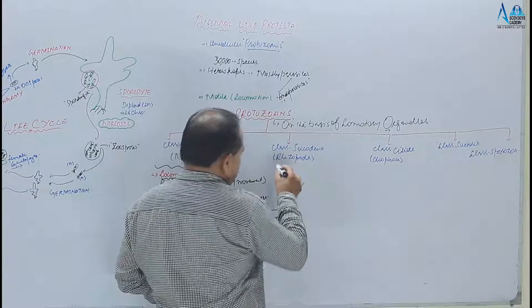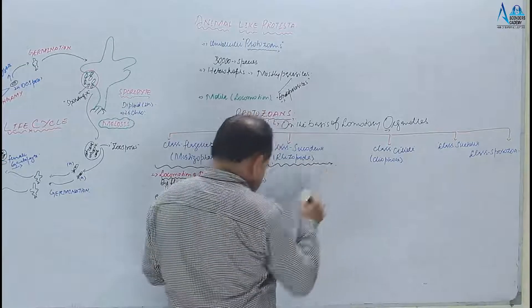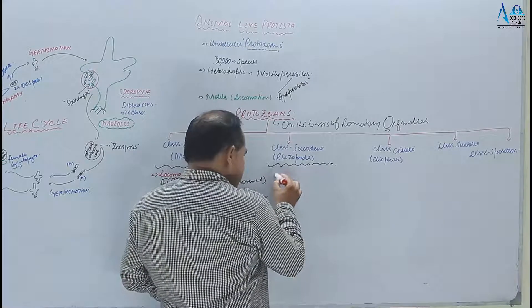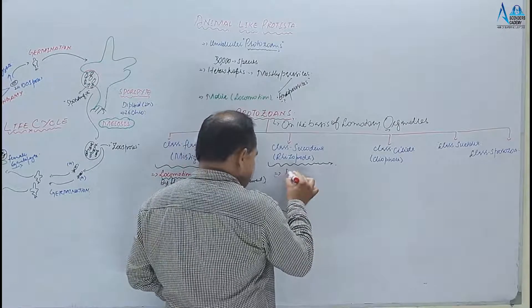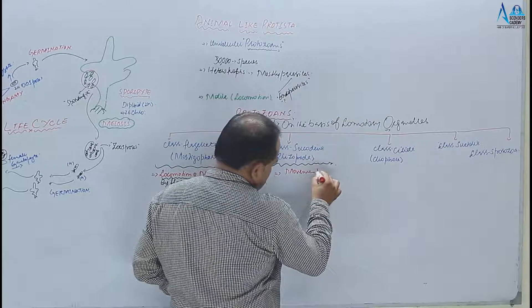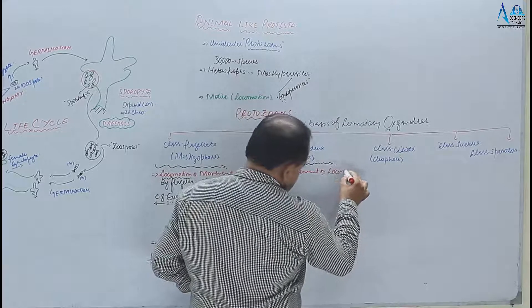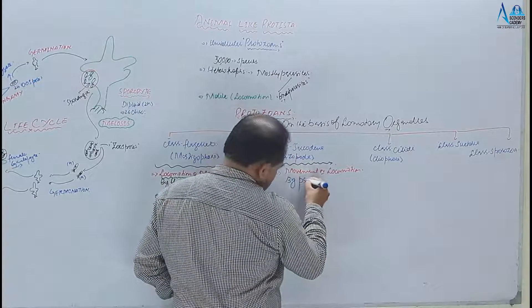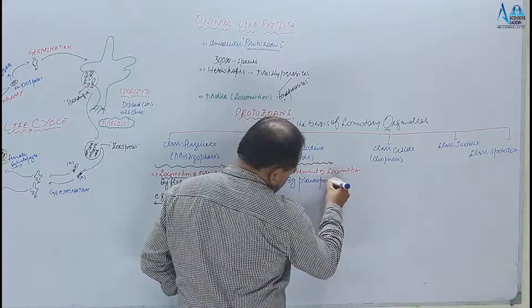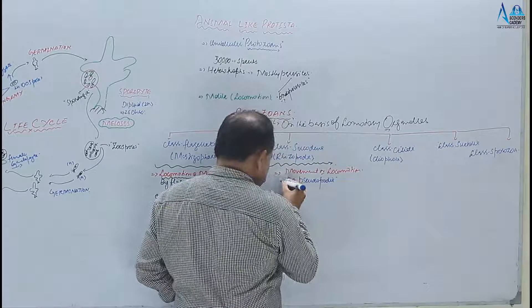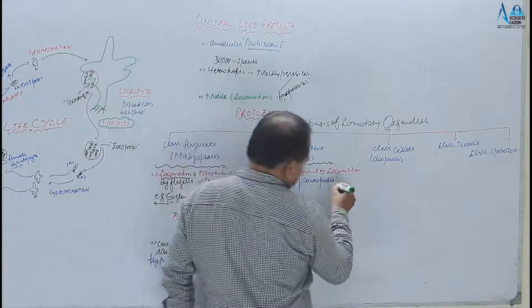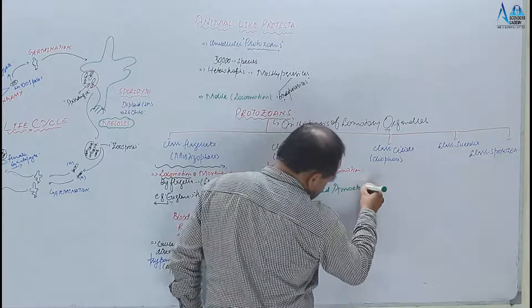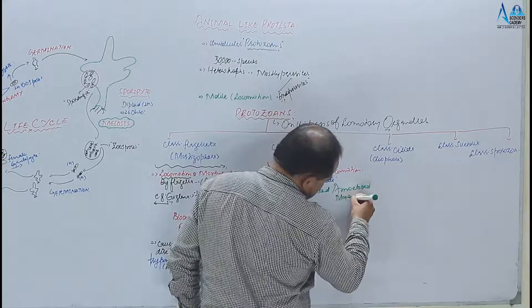Next class Rhizopoda hai, jise Sarcodina bhi kehte hain. Ismein locomotory movement pseudopodial movement hoti hai, jise amoeboid movement bhi kehte hain. Most common example Amoeba hai.